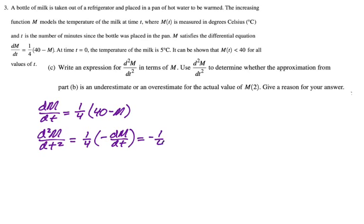So it'll be, I'm taking out the negative, negative 1/4, and then dm/dt, which is 1/4 of 40 minus m. So we have this. I think it's actually useful to simplify a little bit to negative 1/16, and then the quantity 40 minus m. It's useful to do that because we have to draw a conclusion about over and underestimate.